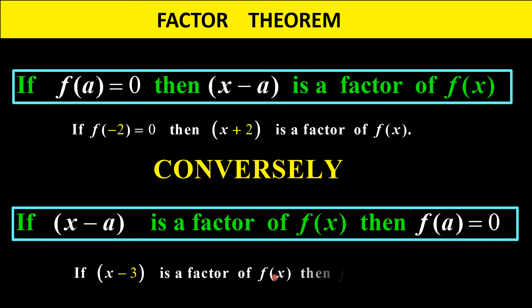What does this mean? If x minus 3 is a factor of f(x), then f(3)'s value would be zero. Whenever you do a substitution in your polynomial and you end up with a value of zero, you obtain a factor. If you substituted negative 2 then your factor would be x plus 2. If you substitute positive 1 then your factor would be x minus 1.